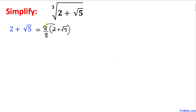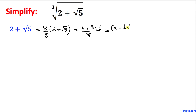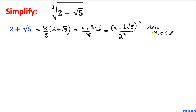Now let's distribute on the top. We can write this as (16 + 8√5) divided by 8, which is 2³. Now we want to express the numerator in the form (a + b√5)³ divided by 2³, where a and b are integers. We are going to find the values of a and b.